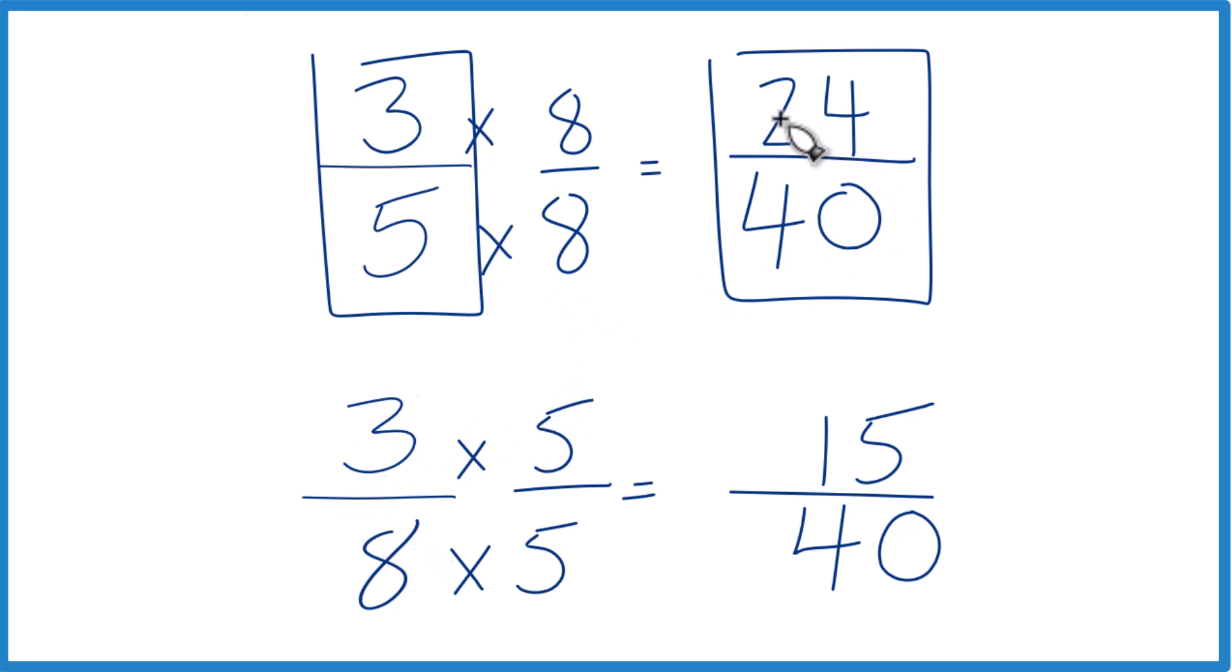And we can tell by how much, 24 minus 15 is nine. So it's nine fortieths larger. Three-fifths is nine fortieths larger than three-eighths.